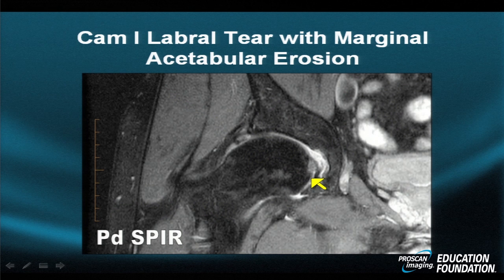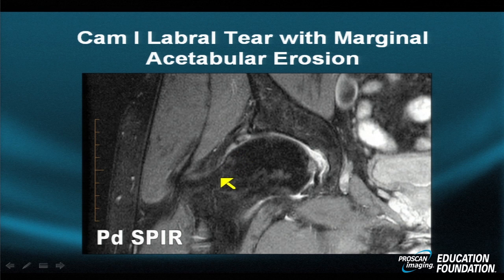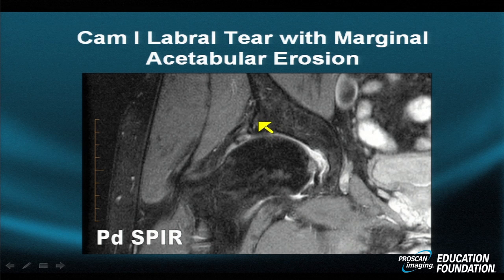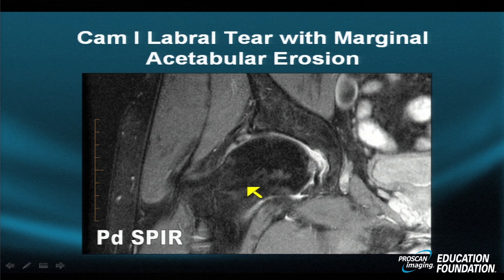Here's an example of a patient with FAI 1 or cam-type impingement. One of the first things to happen with this loss of sphericity of the femoral neck — the lack of tapering, which sometimes may even be convex outward — is a labral tear with change in the hyaline cartilage. Look at the alteration in signal of the hyaline cartilage as we move from medial to lateral. We see a spur and a small subtle osteodematous stress reaction with a macerated labrum that looks swollen, not maintaining its normal triangular, relatively homogeneous dark signal intensity.